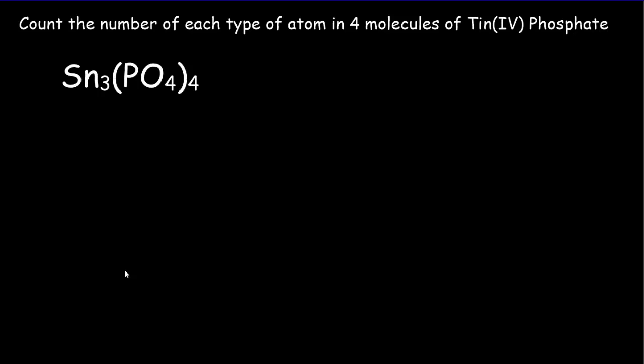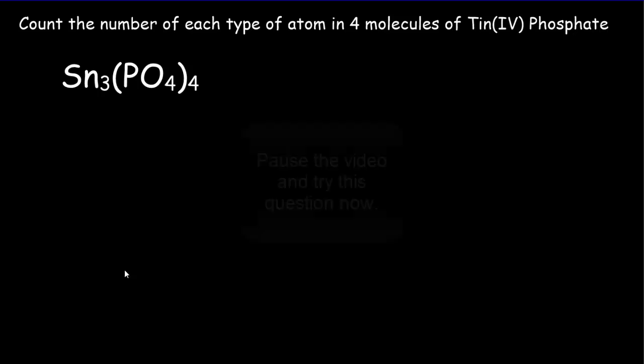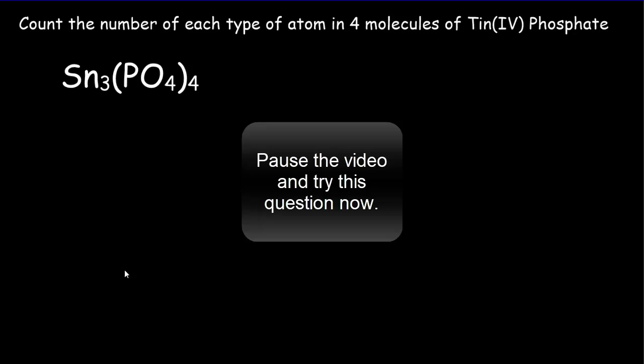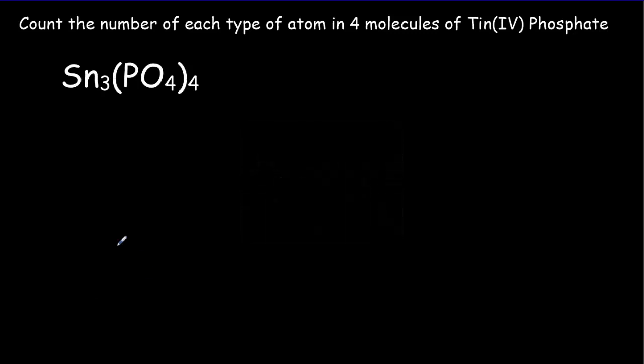So let's see if you're catching on. What I'd like you to do is count up the number of each type of atom in four molecules of tin phosphate. There's a formula for tin phosphate. So pause the video, try the question, come back for the answer. So let's put in our coefficient of four here. We're going to count the tin atoms up first, where we've got three atoms in every molecule times four molecules. So you're going to get 12 atoms.